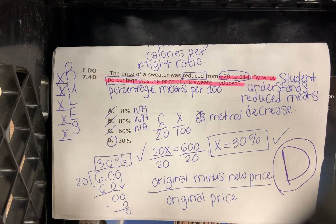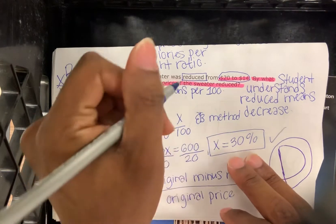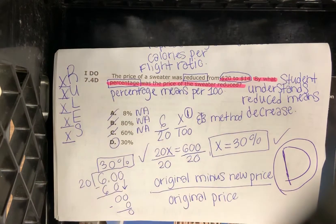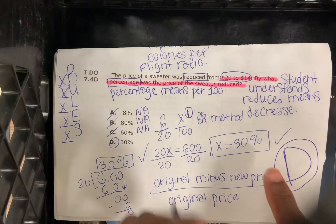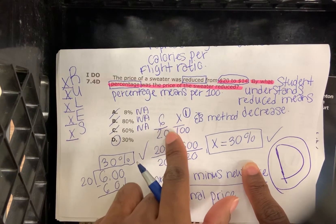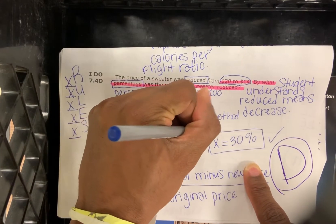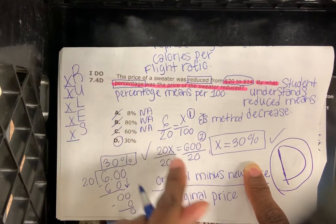So this is how you set up problems like these. This is going to be our first step. Our first step is to set up the butterfly: 6 over 20 equal to X over 100. And then our second step is to divide both sides by 20.